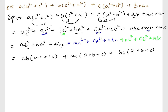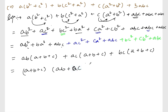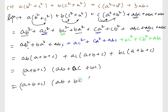Now take (a + b + c) common from all three groups. This gives (a + b + c)(ab + ac + bc). We can write this as (a + b + c)(ab + bc + ca), and this is your answer.